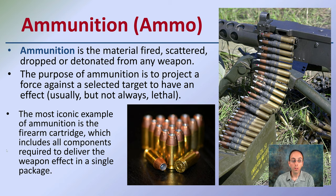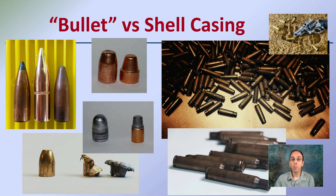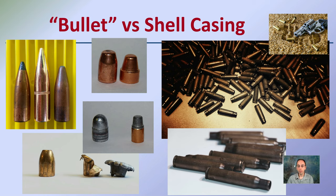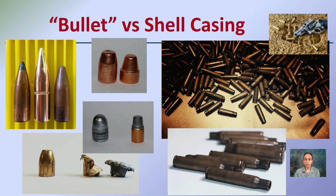The most iconic example of ammunition is the firearm cartridge, which includes all the components required to deliver the weapon effectively in a single package. We have a bullet and a shell casing — these are independent terms and they're different. A lot of times they get mixed up. The ones on screen are all bullets; these are all the shell casings. If you're going through a crime scene and you find shell casings, technically you did not find bullets — just be aware of the terms.